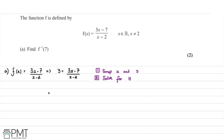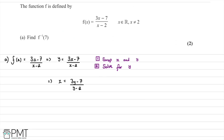After swapping x and y, we have x = (3y - 7) / (y - 2). We now solve for y by multiplying both sides by (y - 2), giving x(y - 2) = 3y - 7. Expanding the left-hand side: xy - 2x = 3y - 7.